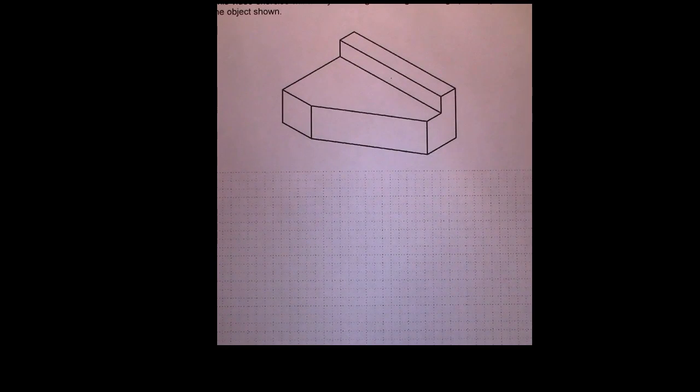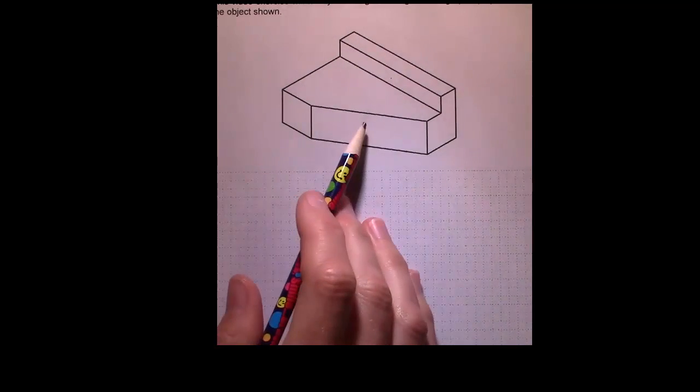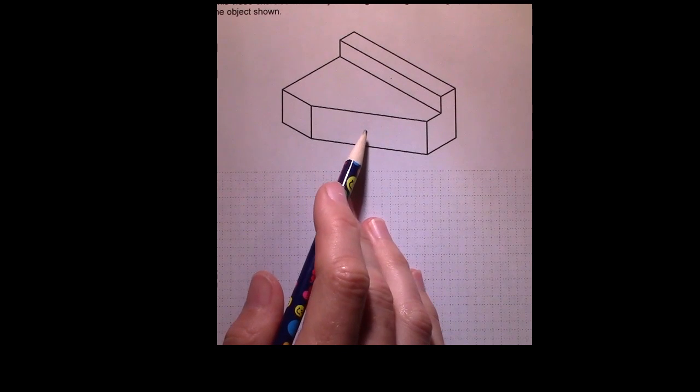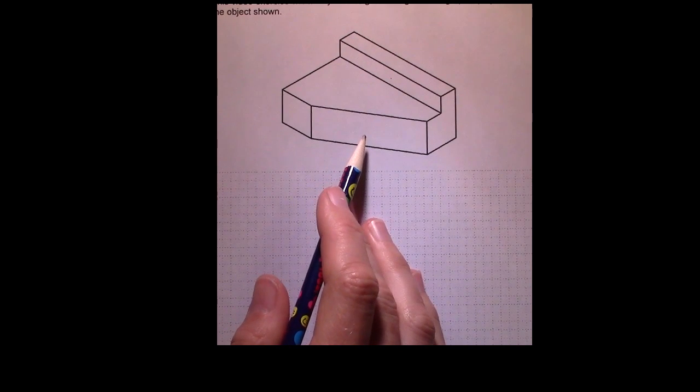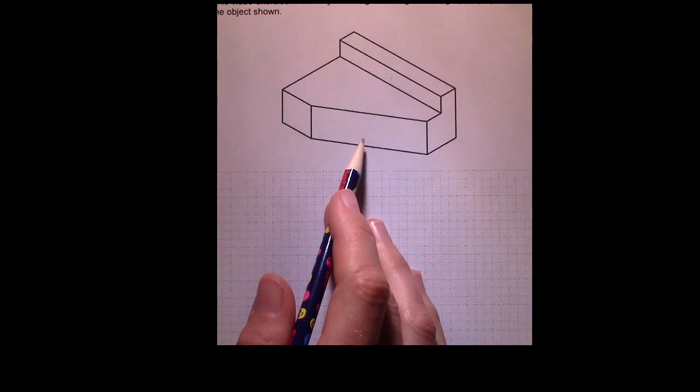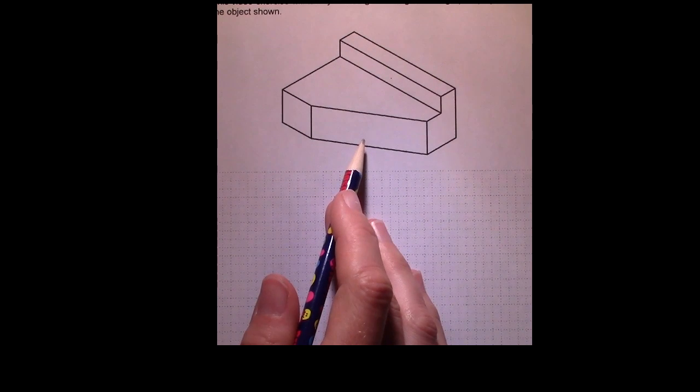In this exercise, we're going to create an orthographic projection of the object shown. The first step in creating an orthographic projection is to choose your front view. Then all of your views are based off of that.